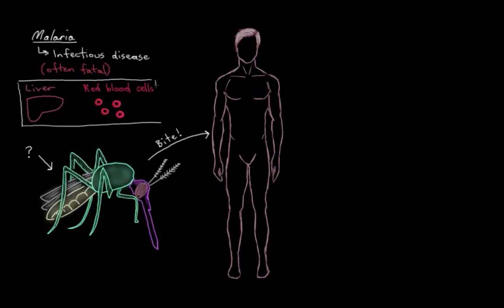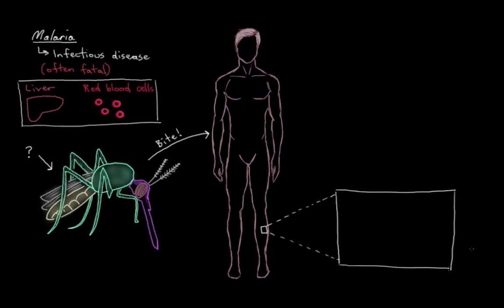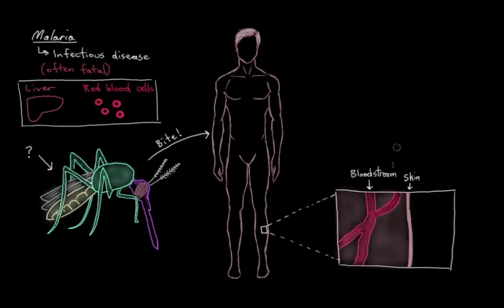Let's zoom in and talk about what happens in a mosquito bite. Here's our skin, and these are blood vessels under the skin. Here's our blood. And out here is our friendly — well, not so friendly in this case — mosquito.